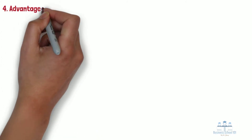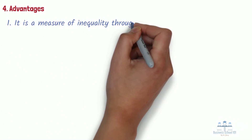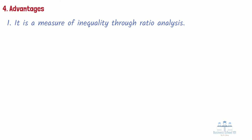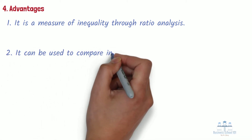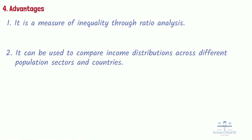Section 4: Advantages. The Gini coefficient has the following advantages. Number 1: It is a measure of inequality through ratio analysis, rather than a variable unrepresentative of most of the population, such as income per capita or gross domestic product. Number 2: It can be used to compare income distributions across different population sectors and countries. For example, the Gini coefficient for urban areas differs from that of rural areas in many countries.